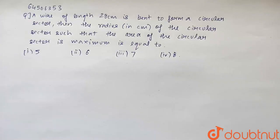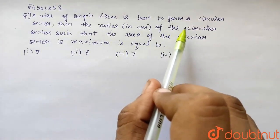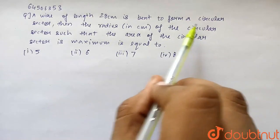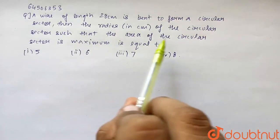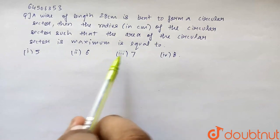Hello students, so the question for today is: A wire of length 28 cm is given. So now we have to bend it and form a circular sector. Then find the radius of the circular sector such that the area of the circular sector is maximum.